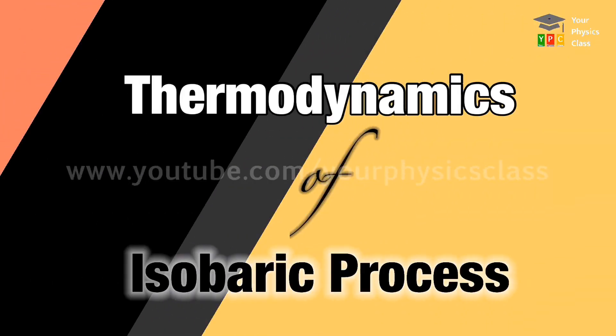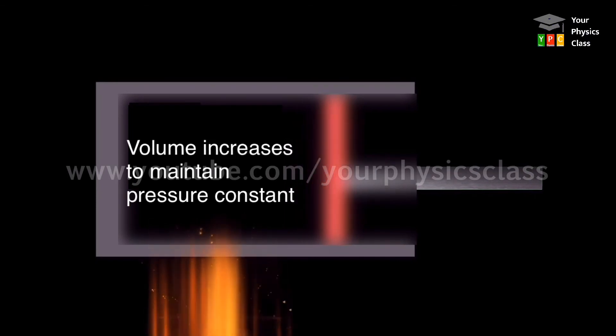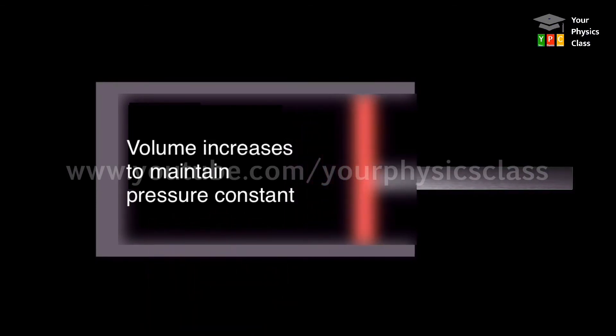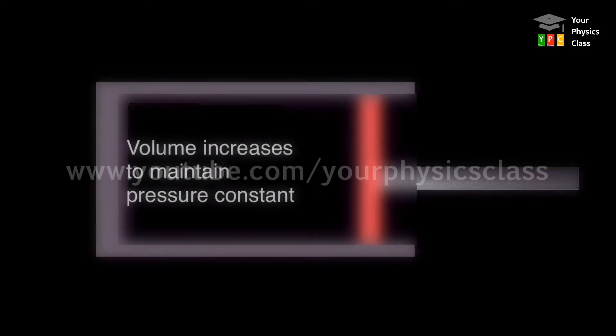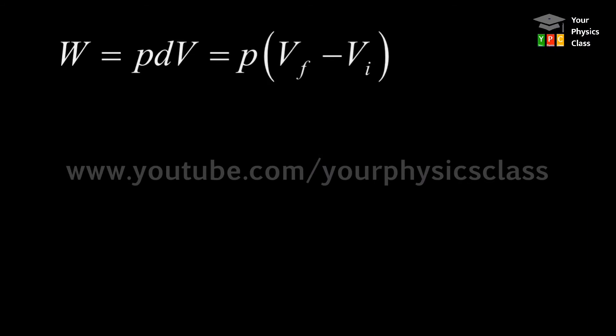Now let us discuss the thermodynamics of isobaric process. The system undergoing isobaric expansion is shown on your screen. The work done during isobaric process is given by W equals P times change in volume. This change in volume is nothing but Vf minus Vi, where Vf is the final volume of the system and Vi be the initial volume of the system. Using equation of state, that is PV is equal to nRT, we may write this equation as nR times change in temperature.